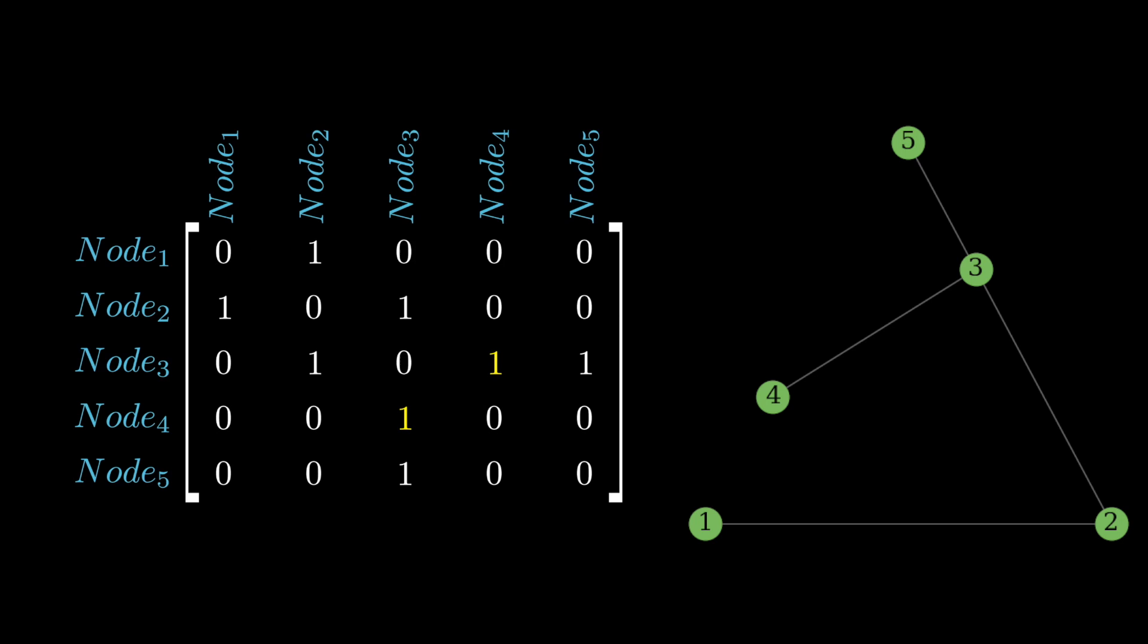There's different conventions for whether the rows or columns encode incoming versus outgoing edges. You might also notice that if you sum the adjacency matrix across the rows or columns, you get the number of incoming and outgoing edges of each node, and that's called the degree of each node. That's an important concept that we'll use later.